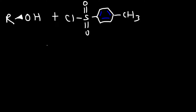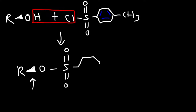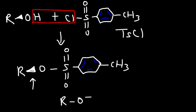Starting with an alcohol with the OH group in the front attached to an R group, and reacting with TsCl, to draw the product you remove HCl and connect the two groups together — giving you R-OTs. As you can see, you get retention of configuration at the oxygen, so the stereochemistry doesn't change. This compound is known as R-OTs, with an OTs group attached to the R group.